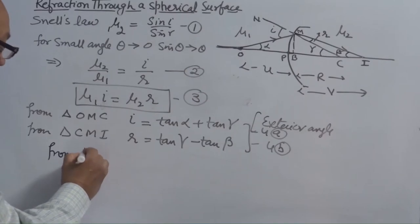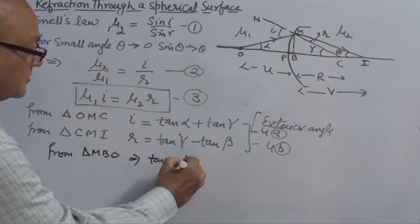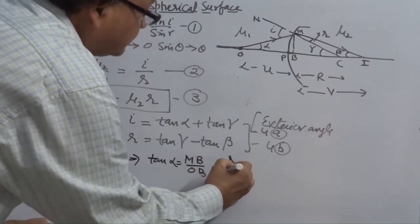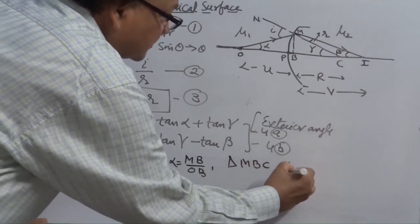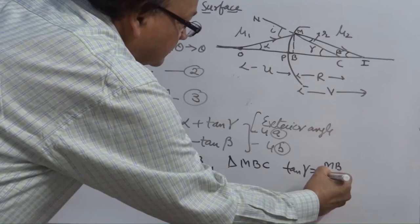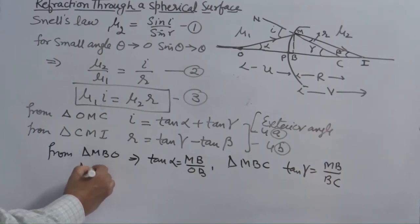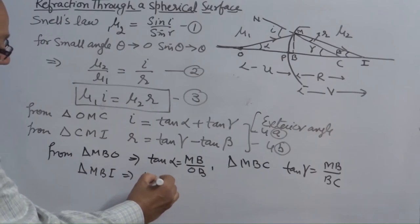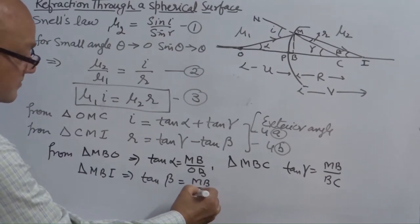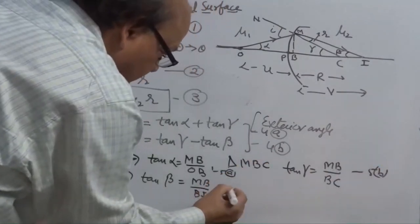Continuing here. In this case what we have to put the values of tan alpha, tan gamma, beta and tan gamma. From triangle M, B, C you can get tan alpha is equal to M, B over O, B. From triangle M, B, C you can get tan gamma is equal to M, B over B, C. And from right angle triangle M, B, I you can get tan beta is equal to M, B over B, I. This you can say 5A, 5B, 5C.